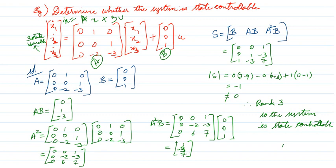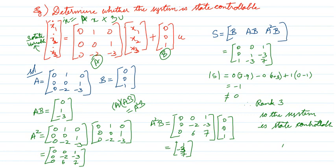Instead of finding A² and multiplying with B, you can take A·(AB) since A·AB = A²B. Multiply AB with A to get A²B. You get the values 1, -3, and 7. Now find the rank of this matrix S by finding its determinant. On solving, I get minus 1. Since minus 1 is not equal to 0, the rank of the determinant is 3, and the number of state variables is also 3. So the system is completely state controllable.